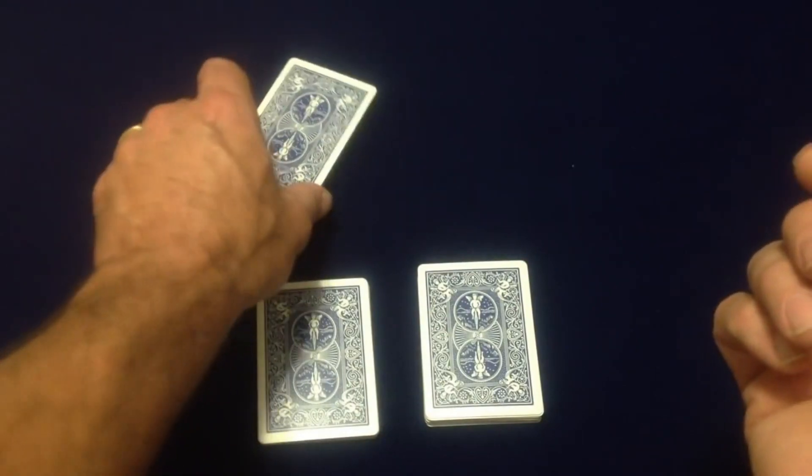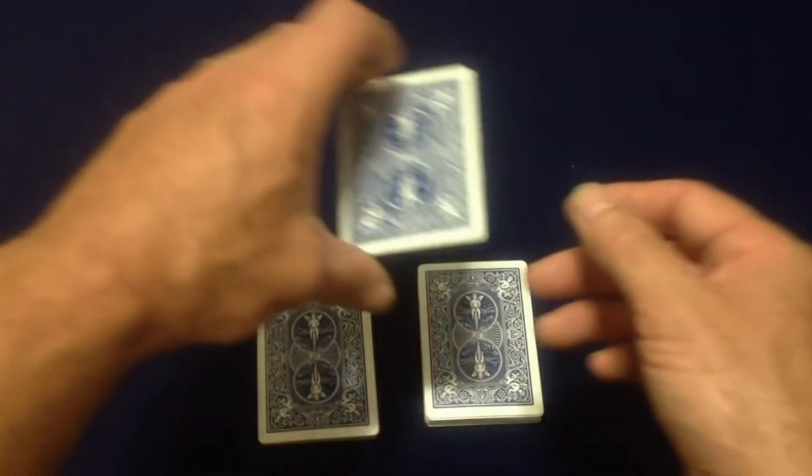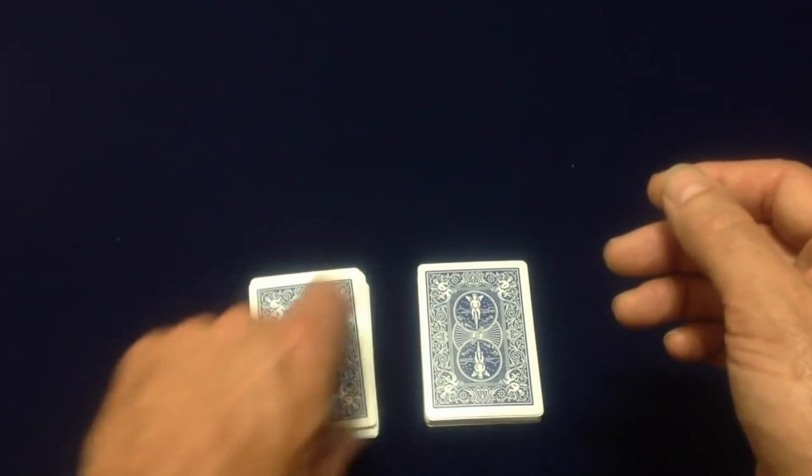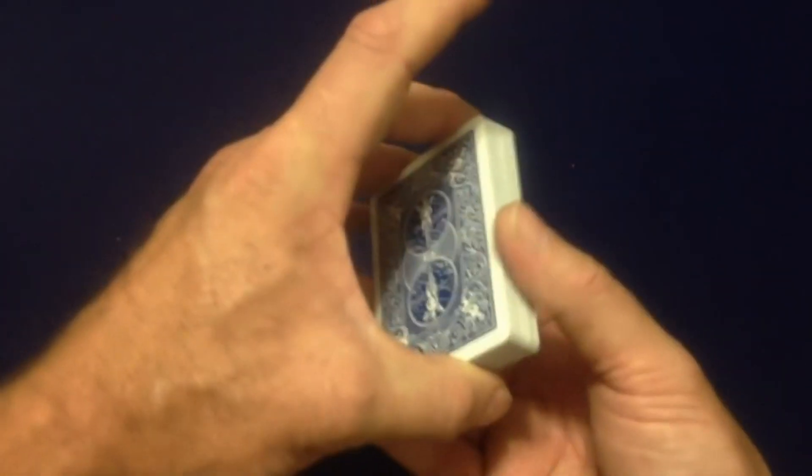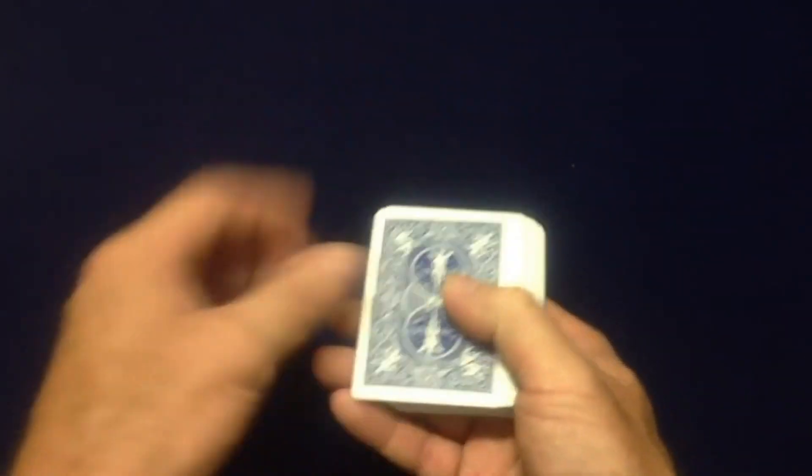And that's all you need to do for the trick to work. Then when they put this card back, you just mix it in, square up the deck, make your four piles.